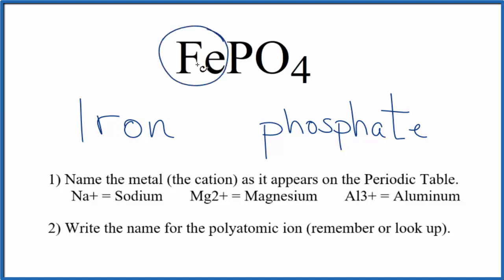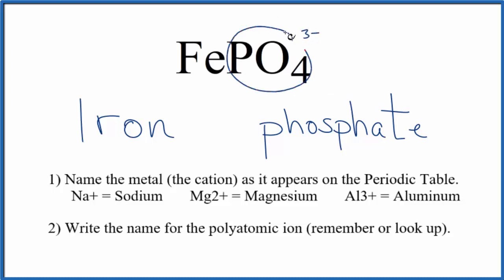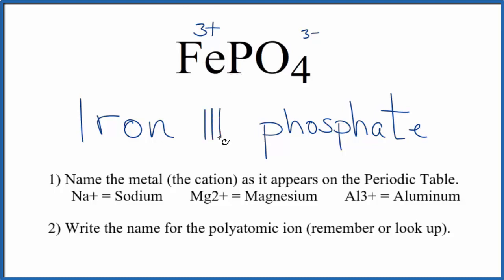But iron is a transition metal, which means it can have different ionic charges depending on what it's bonded to. Here, it's bonded to the phosphate ion, and the phosphate ion has a total charge of 3 minus — that's on the whole PO4. This is a really good one to remember. So we have 3 minus on the phosphate; the iron has to be 3 plus for the net charge to be 0. Because the iron is 3 plus and it's a transition metal, we write Roman numeral 3 in parentheses between the iron and the phosphate.